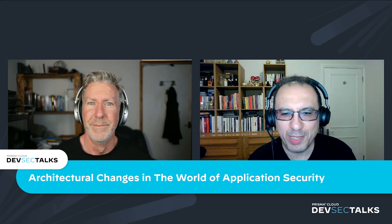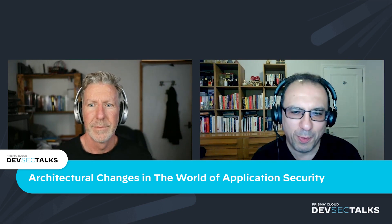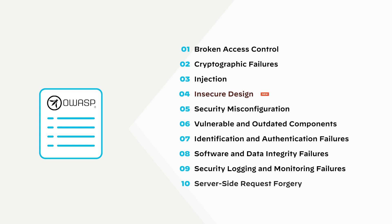If you look at the OWASP Top 10, a guidance document produced by OWASP every three years for the past 20 years, and compare the 2004 list with 2013, 2017, and last year's edition, you'll notice that probably 80% of those risks are exactly the same vulnerabilities and issues we had 20 years ago. Even now in 2021–2022, we still see SQL injection, cross-site scripting, and authentication and authorization issues as the most prevalent and critical vulnerabilities.